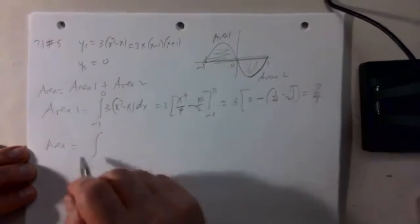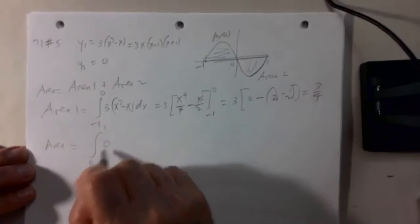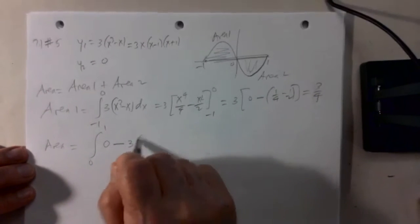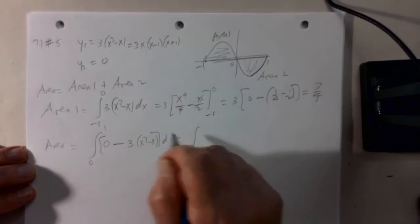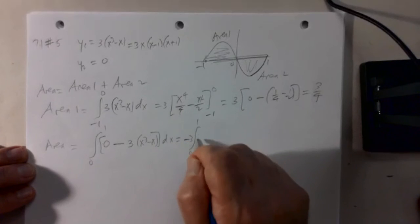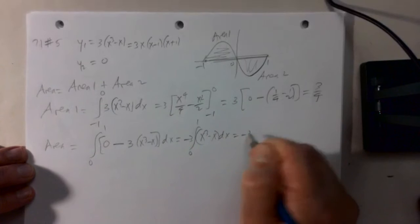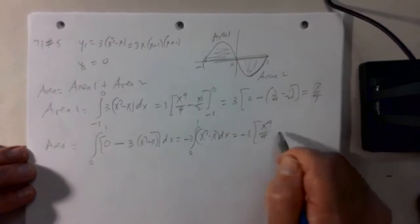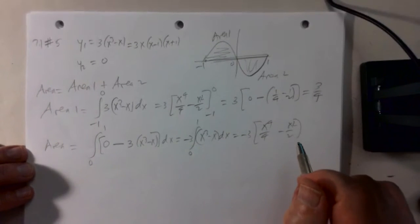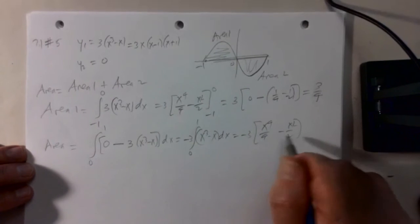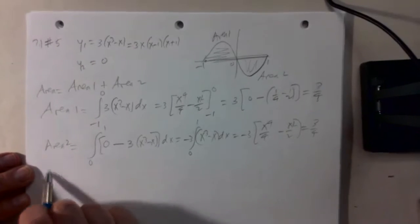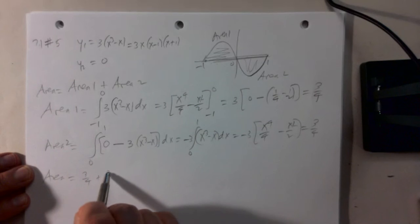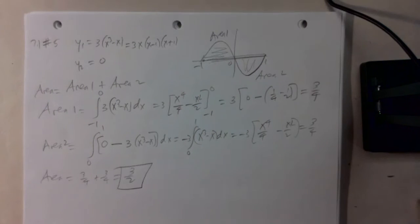And the second area is the integral from 0 to 1 of the top of 0 minus the bottom. So that's the integral of minus 3, 0 to 1, x cubed minus x. That's minus 3 x to the 4 over 4 minus x squared over 2. When x is equal to 1, 1 fourth minus 1 half minus 1 fourth is another 3 fourths. That's area 2. So the total area is 3 fourths plus 3 fourths, which is 3 halves.